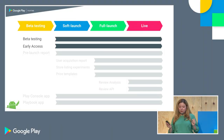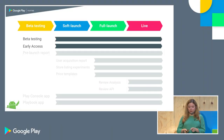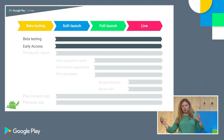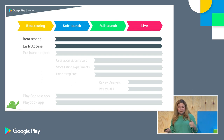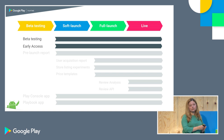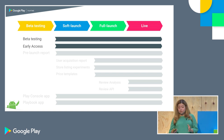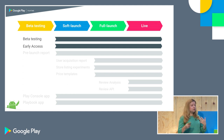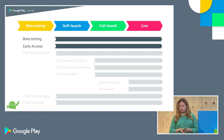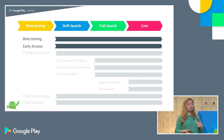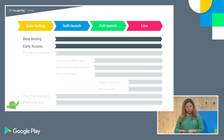Beta testing and Early Access are useful all throughout your lifecycle. You want to use them to soft launch, when launching to everyone for the first time, and then keep using them afterwards to iterate on new features and keep improving your app.